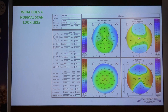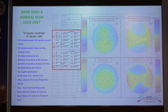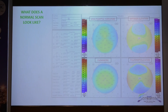A normal scan gives us the axial curvature, anterior elevation, posterior elevation, and the pachymetric map. On the left-hand side are all the indices required to read the map and evaluate whether the map is normal, suspicious, or abnormal. The scales are very important — it can be a normalized or a standardized scale. The standardized or absolute scale has a fixed dioptric increment and helps in comparing scans, whereas with a normalized scale, we can change the dioptric increments.